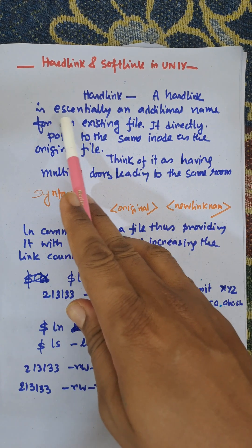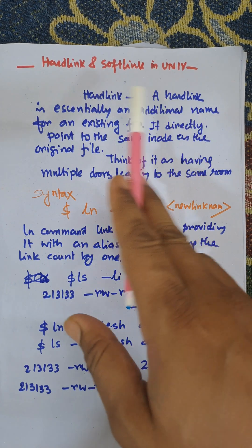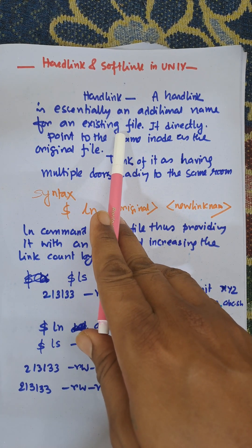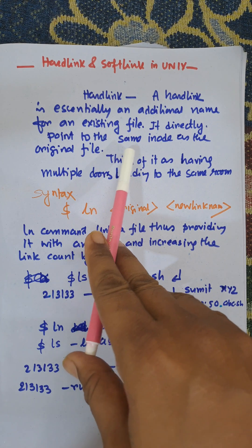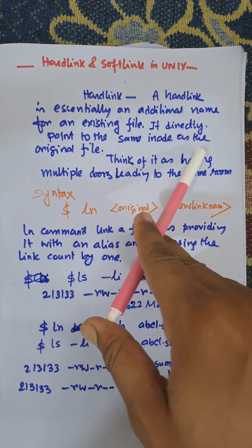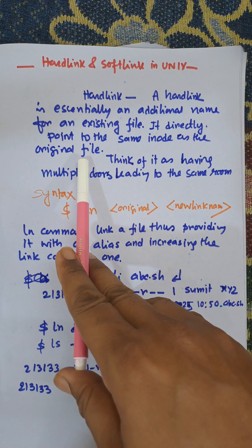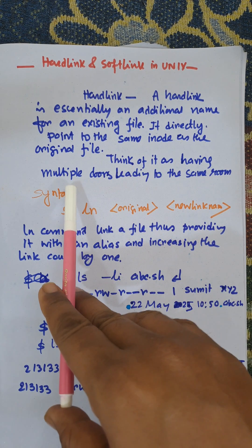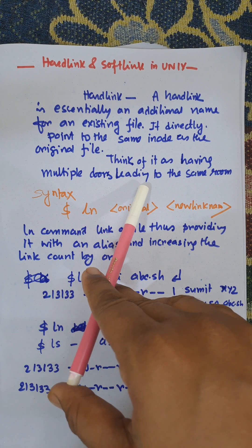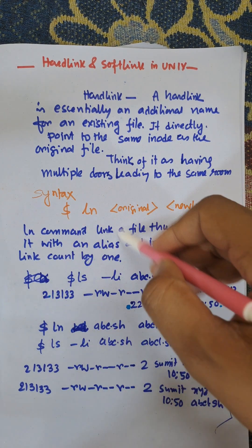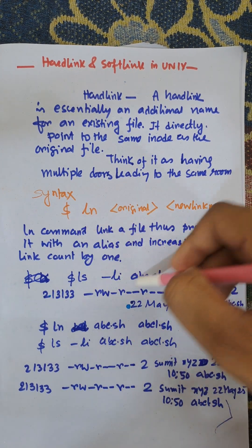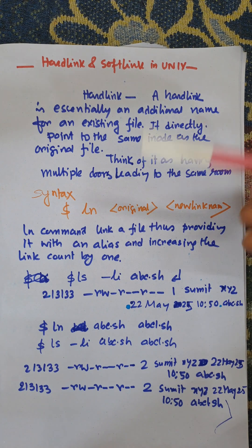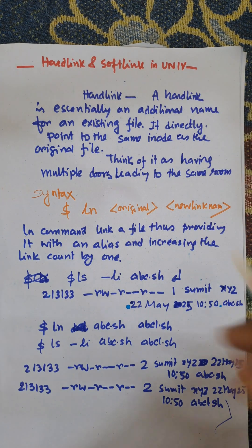A hardlink is essentially an additional name for an existing file. It directly points to the same inode as the original file. Think of it as having multiple doors leading to the same room — there is one room and there are many entry points to that room. So this is like a hardlink.